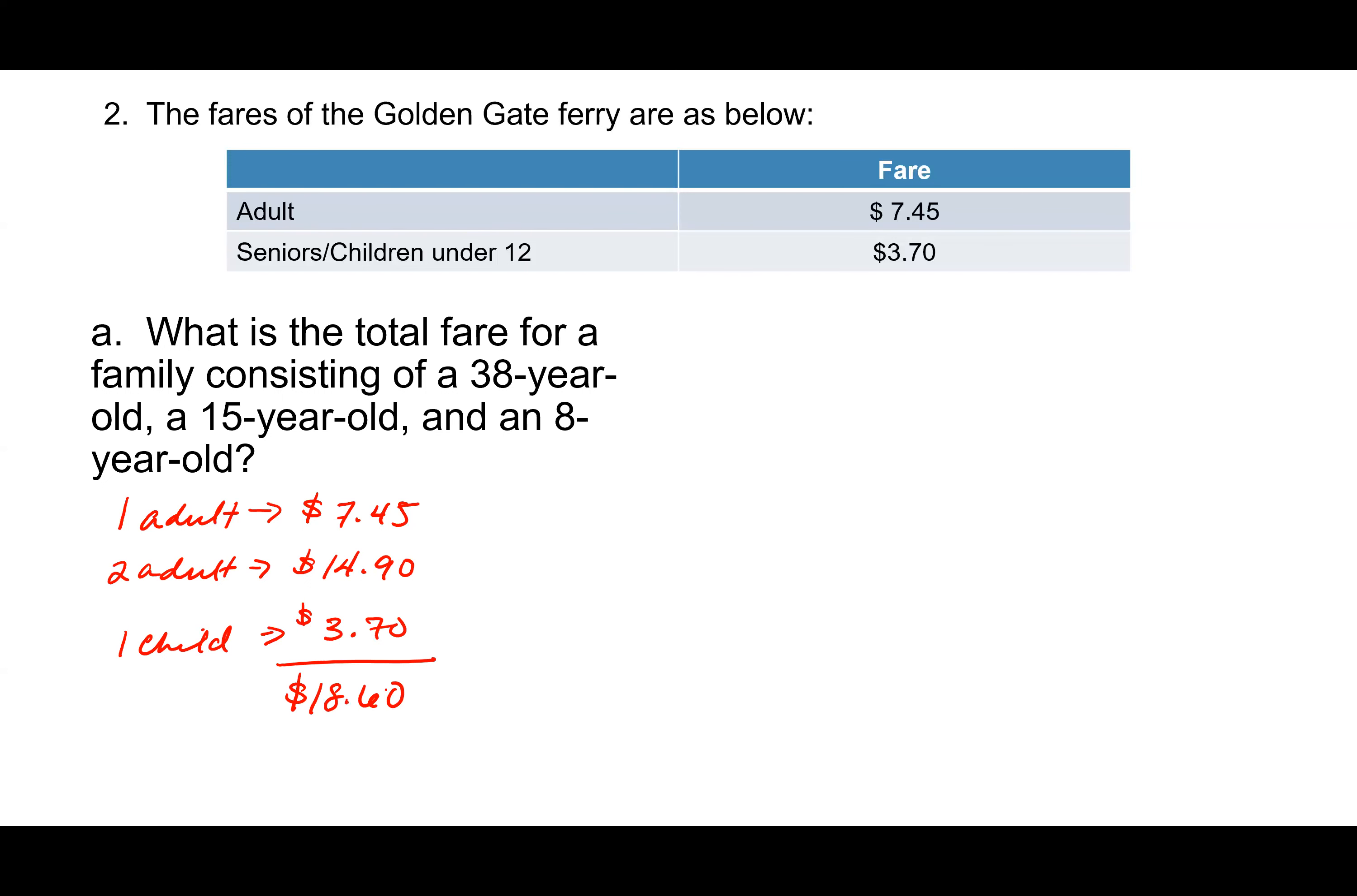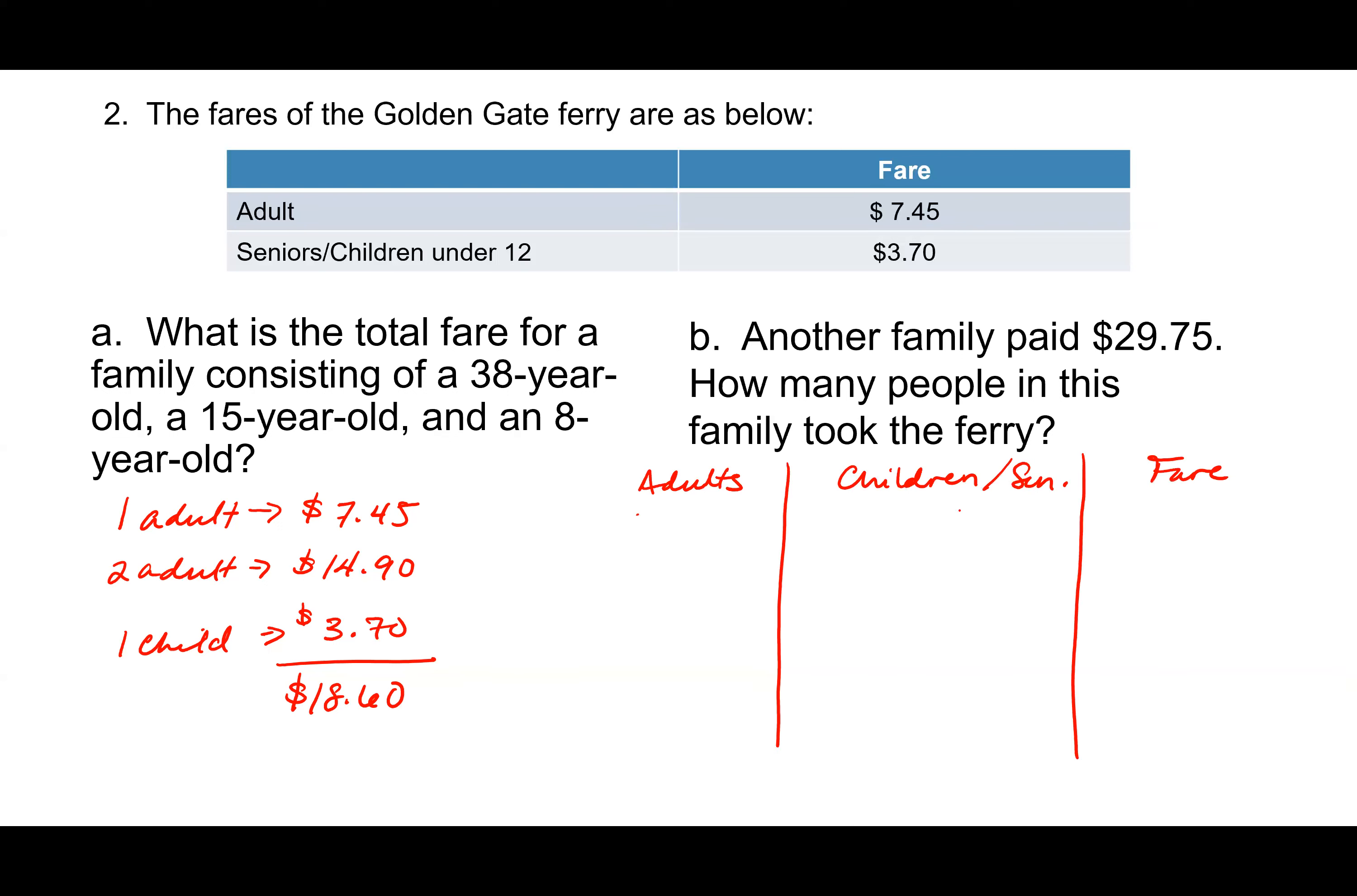How about B? B was maybe a little bit harder because you needed to find the right combination. So who's got an answer for that one? Maddie? Yeah, that's correct. So how did you, did you have a systematic way for guessing and checking on that one? Alex? First I added two kids and two adults and then I got $21.30. So then I knew if I added an adult I'd put it in the right amount. Great.